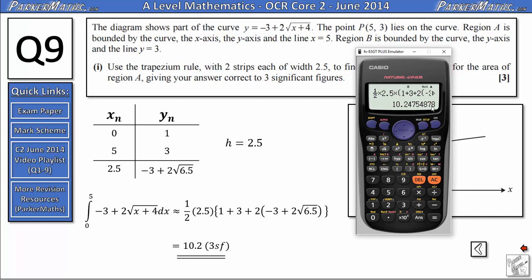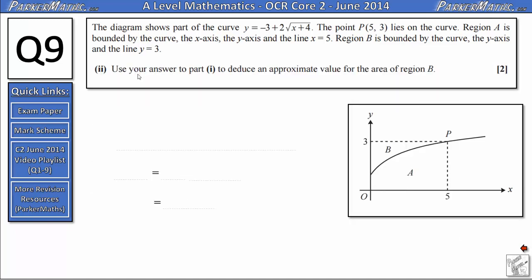And that gives us 10.2 if we round to three significant figures. As I'm going to need this value later in the question, I'm going to store it in my calculator as A. To do that, I press the shift button and then the store button, and then I press the red letter A here. In part 2, I need to use my answer from part 1 to deduce an approximate value for the area of region B.